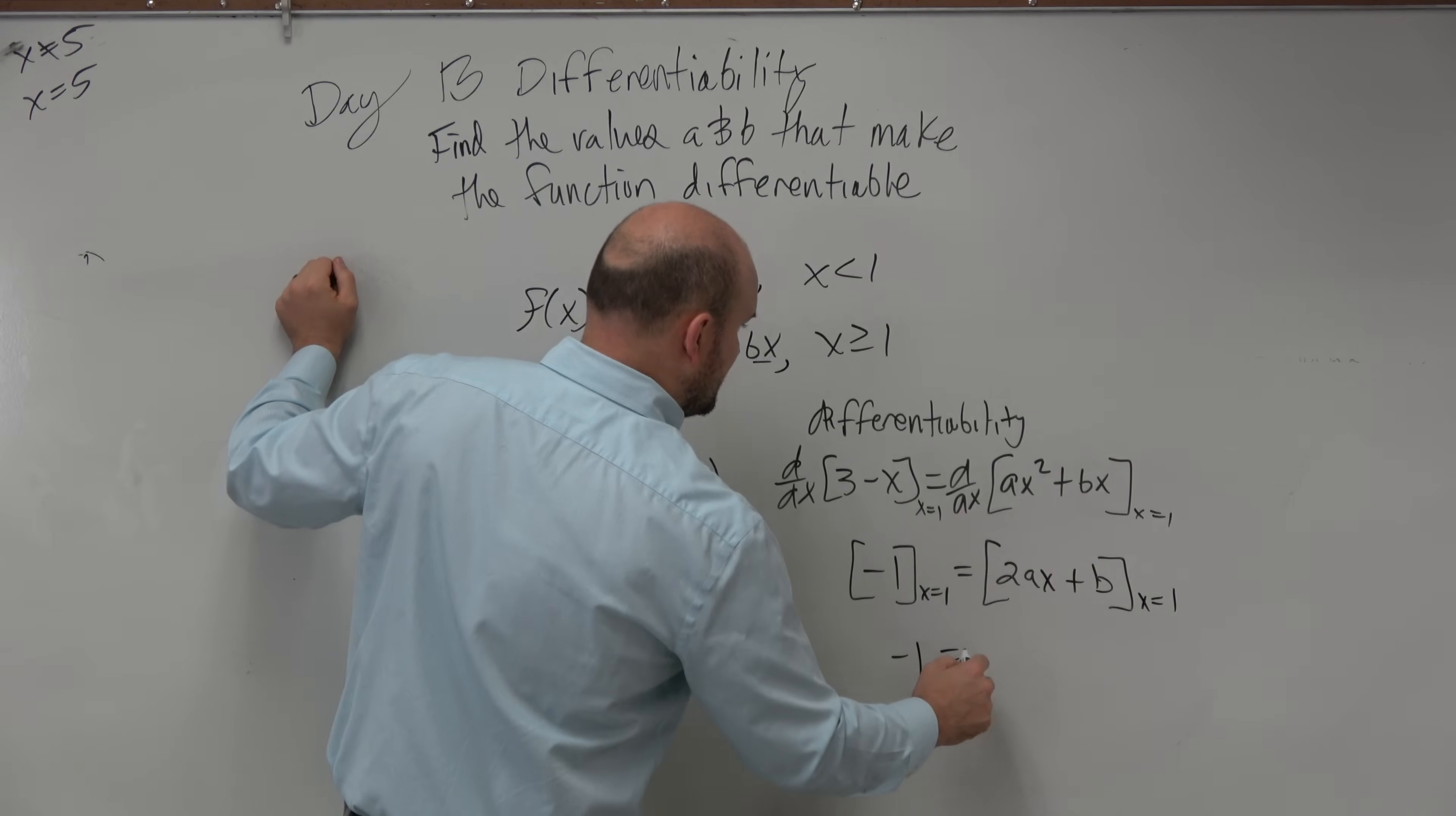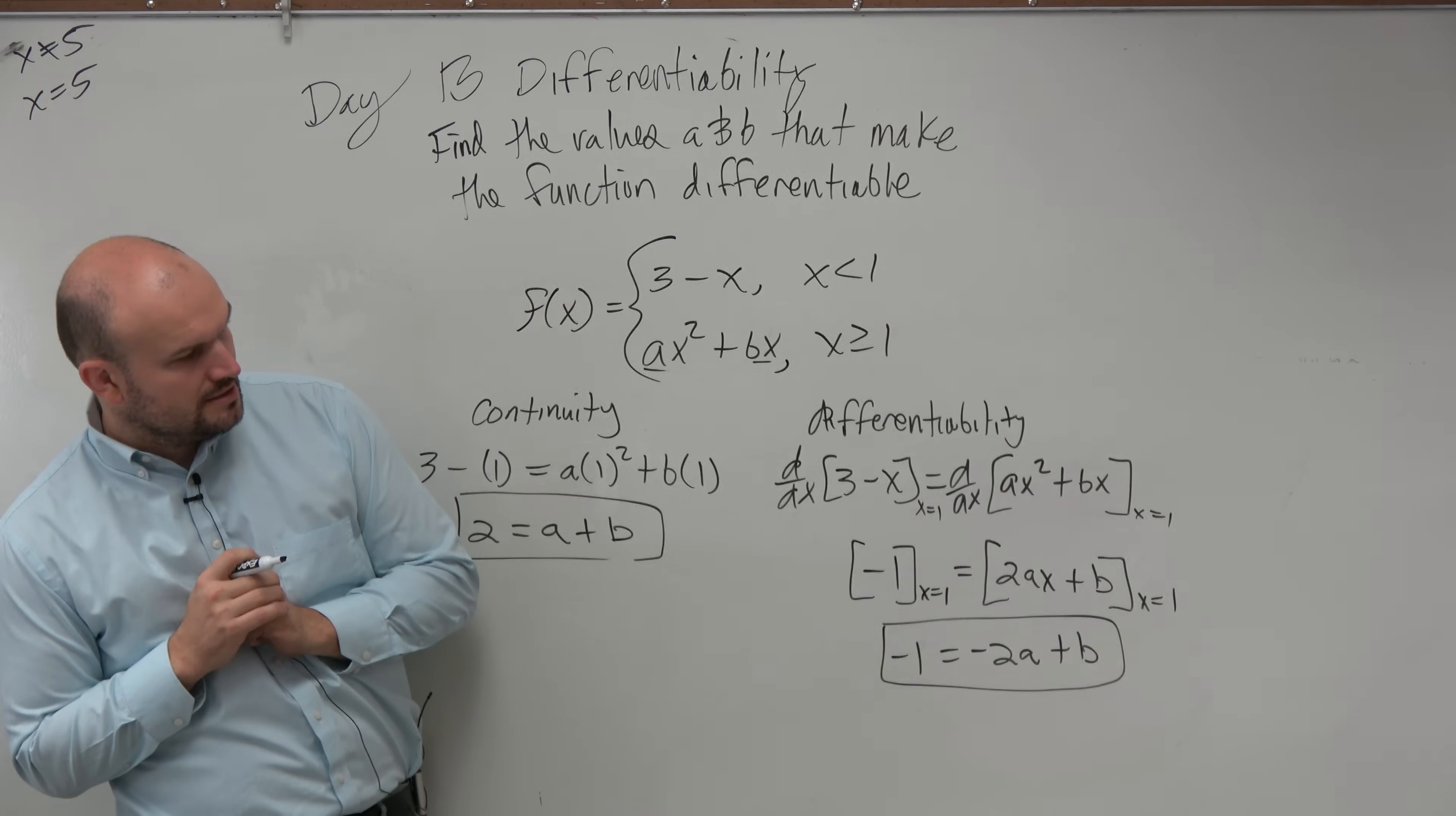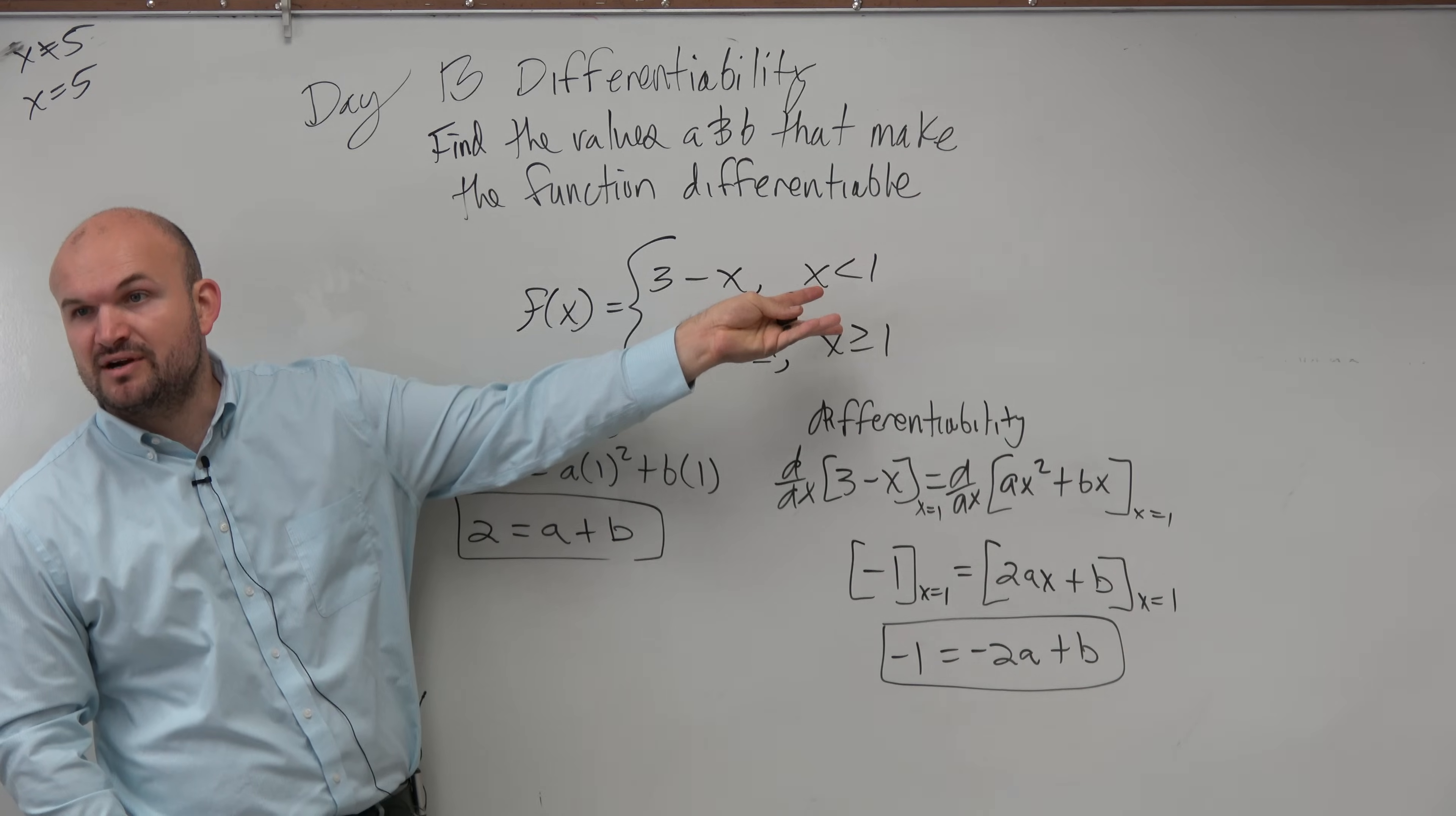So, therefore, I get negative one is equal to negative 2a plus b. Does everybody see what I did? I plugged—I took the derivative and then evaluated the derivative at one. Why one? Because that's where I want to test the derivative on the left and right, same side.